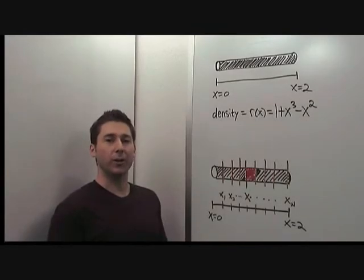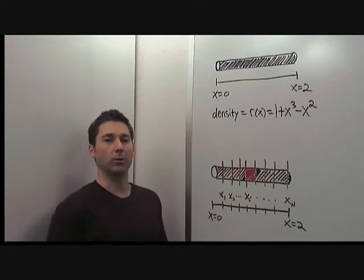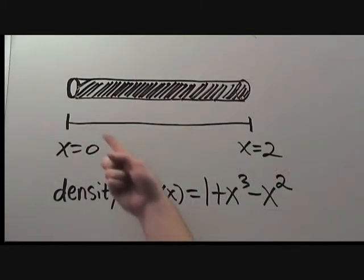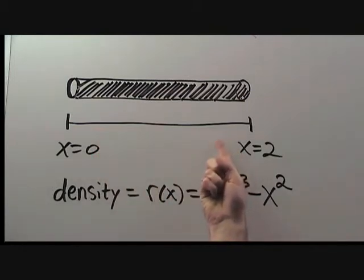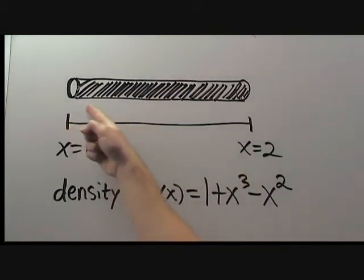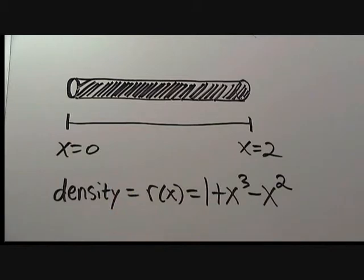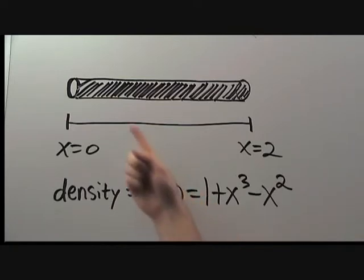Let's use the expression for the center of mass for a discrete number of points applied to our problem. We are working with a 2-meter long rod whose density changes as you move along the rod. We take one end to be x = 0, and the density is ρ(x) = 1 + x³ − x². We need to apply the discrete formula to this continuous object. A good way to do that is to chop it into small pieces.